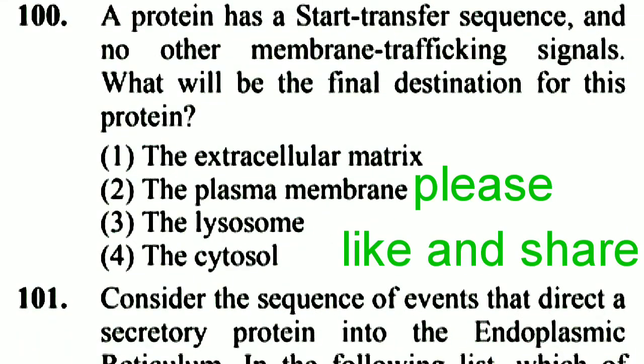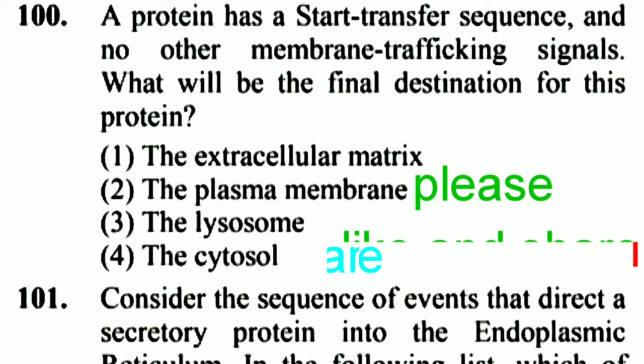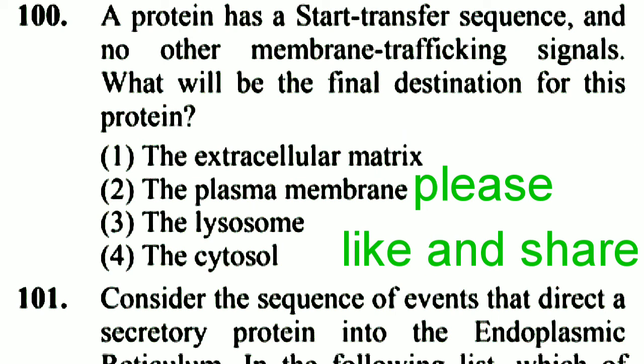If you found this video helpful, please like the video, subscribe to our channel, and share the video with your friends. Question 100: A protein has a start transfer sequence and no other membrane trafficking signal. What will be the final destination for this protein? The plasma membrane. Option 2 is right. Thank you for watching this video.